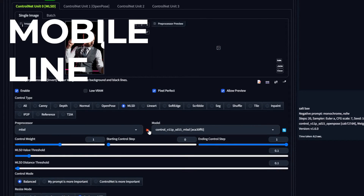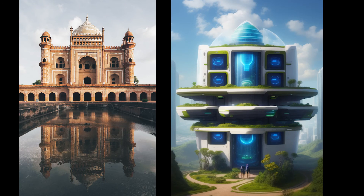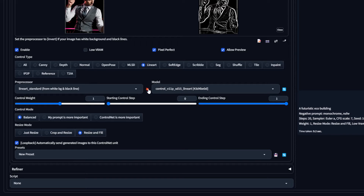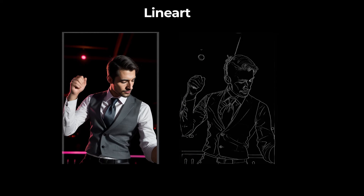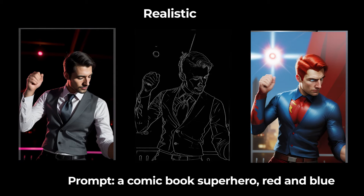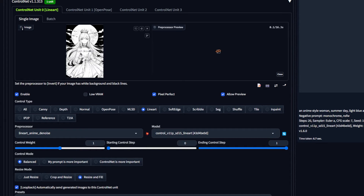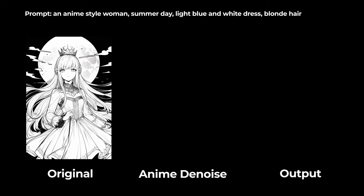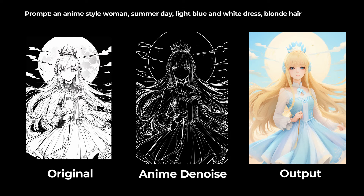MLSD stands for Mobile Line Segment Detection, and like Canny, it picks out the lines in the control image, but only focuses on the straight lines. MLSD works great for structures and architecture. Line art is kind of like Canny, but it takes the outline of the image and converts it into something more similar to a drawing that Stable Diffusion can then base its image on. Realistic will try to make a more realistic rendering of the image, and Coarse will give you more exaggerated lines. The anime models can actually be used to pull in real anime line art drawings to give them detail. This one's good for turning line art into any other kind of art and vice versa, or for turning your friends into anime characters.